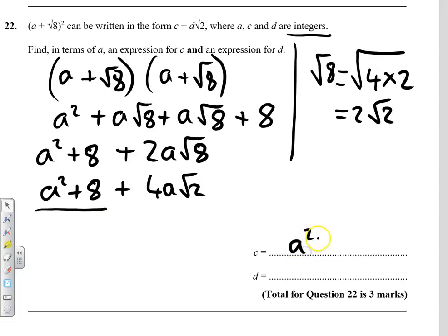so it's A squared plus 8 and our D is the coefficient, the number in front of the root 2 which is 4 A. So we've expressed C and D in terms of A, 3 marks.